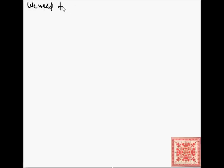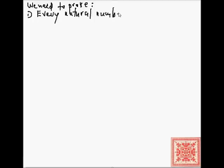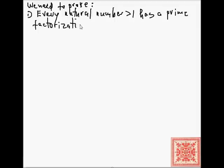So, what do we need to prove? We need to prove two things. First, that every natural number greater than 1 has a prime factorization. And second, that this prime factorization is unique.